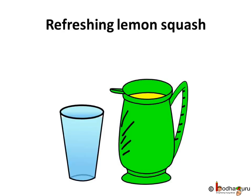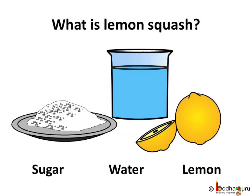Imagine you come back home after playing on a summer afternoon and you find that your mother has made some refreshing lemon squash for you. That would be really nice, isn't it? What is lemon squash made of? It is quite simple to make it. Cut and squeeze a lemon to get its juice, add sugar and water to it. A few things or substances are mixed together to form a mixture — here it is lemon squash.